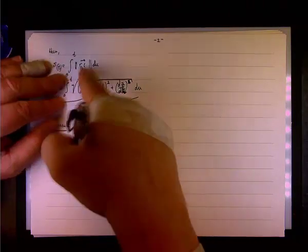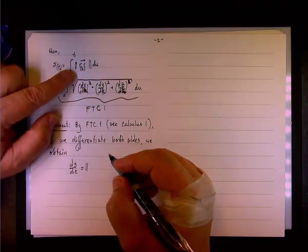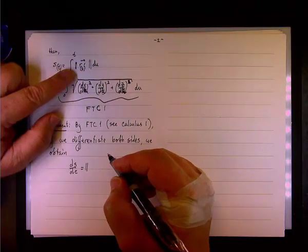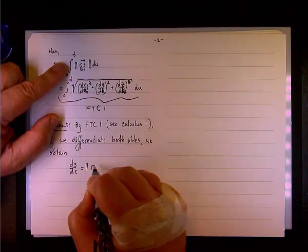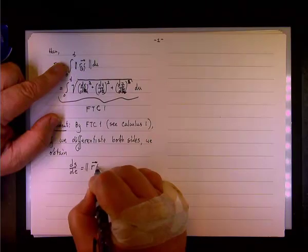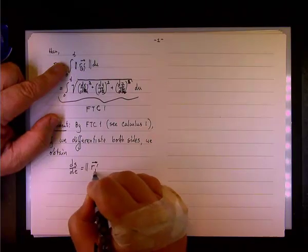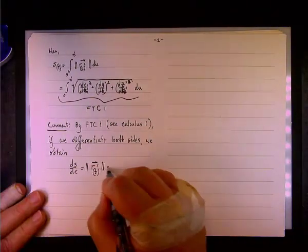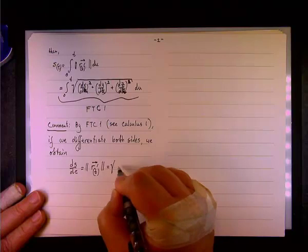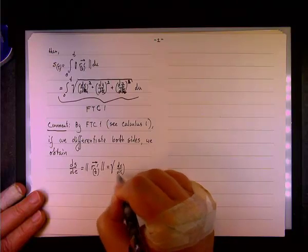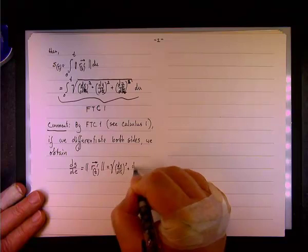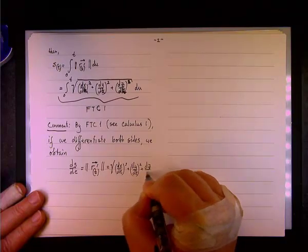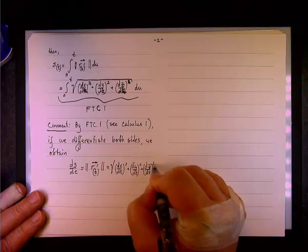Or, in short, we can say it becomes the integrand evaluated at t. So, it becomes the magnitude of the derivative vector R evaluated at t. Or, we can write it as the square root of (dx/dt)² plus (dy/dt)² plus (dz/dt)².